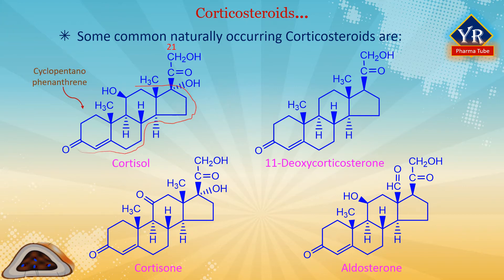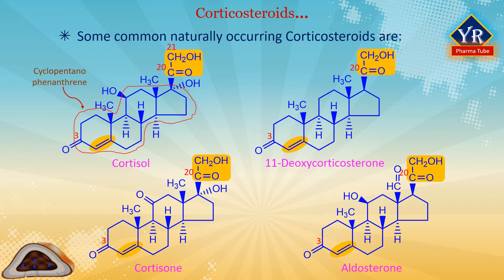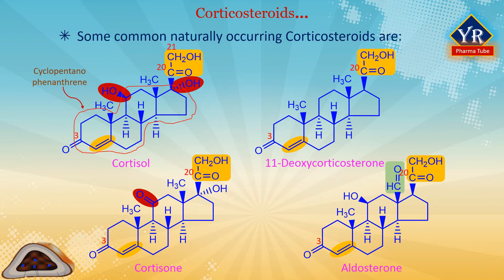They are derivatives of cyclopentanoperhydrophenanthrene with keto groups at C3 and C20, an unsaturated bond between C4 and C5, and the presence of an axial beta-carbonyl hydroxymethyl side chain at C17, which is absolutely necessary. They all possess the delta-4-en-3-one function and a 20,21-ketol group — meaning a 20-keto and 21-alcoholic group. They differ by the presence or absence of a 17-alpha-hydroxyl group and the presence or absence of an oxygen function at C11 (11-beta-hydroxy or 11-oxo group). In aldosterone, the 18-methyl group is replaced by an aldehyde group.